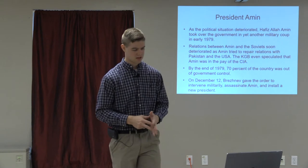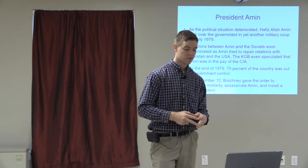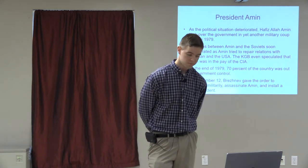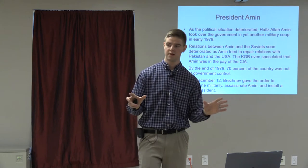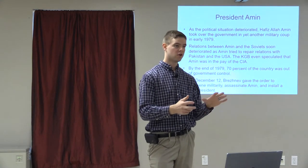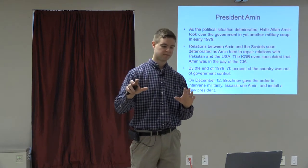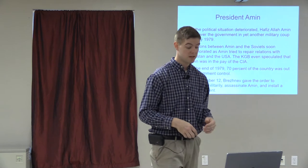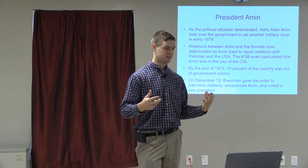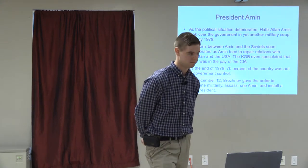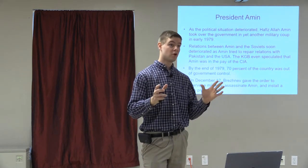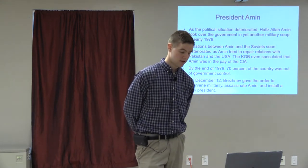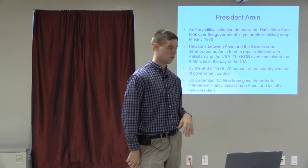Amin started to back off from some reforms, realizing it just wasn't going to work moving so fast. He also began pulling away from the Soviet Union and tried to renegotiate terms with Pakistan and even reached out to the United States — so much so that the KGB speculated he was on the CIA payroll. The result was that nobody was happy: the Soviet Union didn't like him, the Islamists thought it was too little too late, and by the end of 1979, 70% of the country was outside government control.